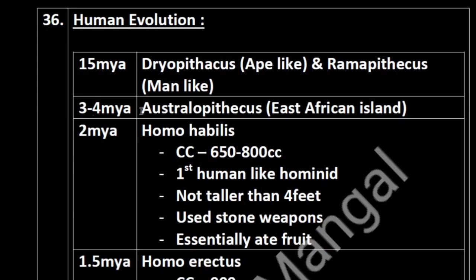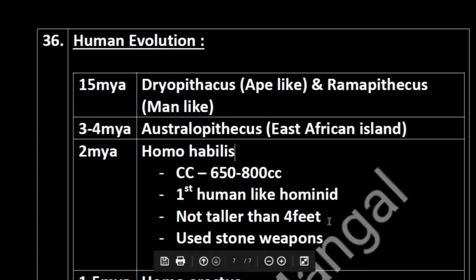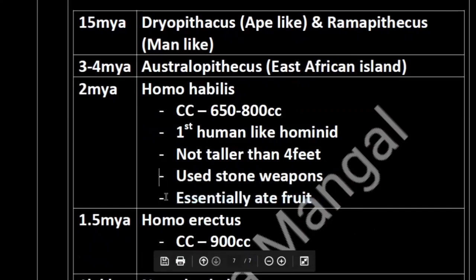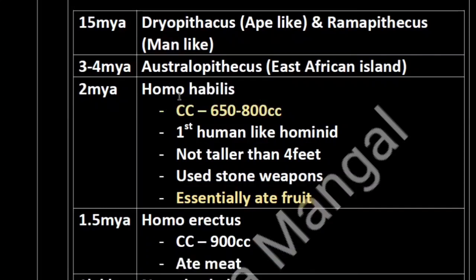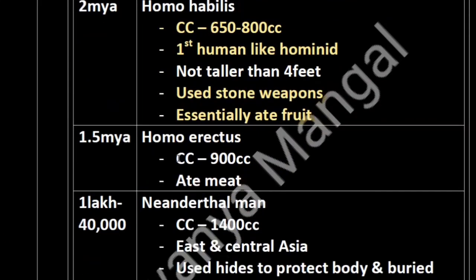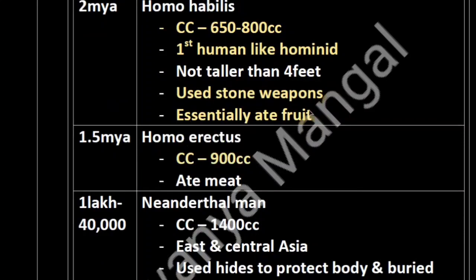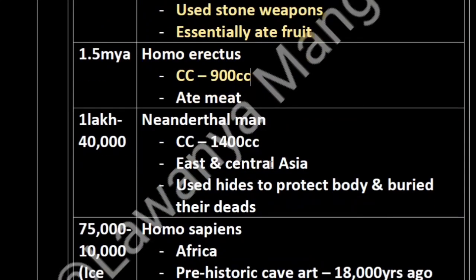2 million years ago came Homo habilis. Characteristic feature: essentially ate fruit — was vegetarian. Cranial capacity 650–800 cc. This was the first human-like hominid — important point. Homo habilis used stone weapons. 1.5 million years ago came Homo erectus — cranial capacity 900 cc. Homo habilis was vegetarian, but Homo erectus ate meat — was non-vegetarian.